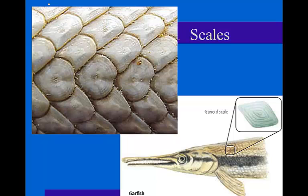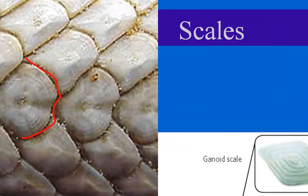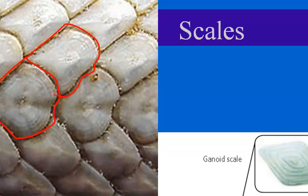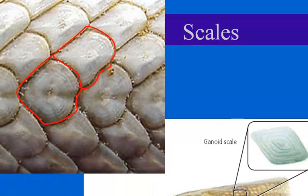Ganoid scales are rare among modern fish; they're usually found on really old fish like gars and sturgeon. They act like armor and are fairly impenetrable. What's unusual is they don't overlap but instead fit together, like chain mail or armor. These scales also grow with the fish — not only getting longer, but wider and thicker as well.